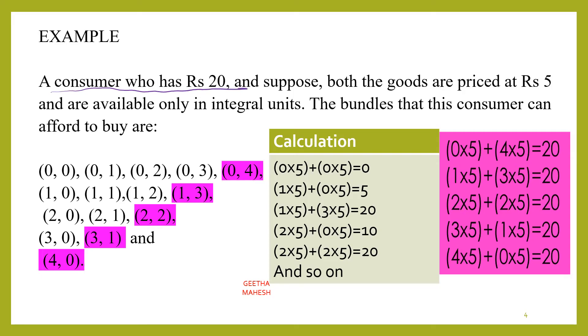Let's take a small example to understand this. A consumer who has Rs 20, and suppose both goods are priced at Rs 5. So price of good x1 is Rs 5 and price of second good is also Rs 5. In this situation, we need to calculate the budget set and budget line by finding different combinations.